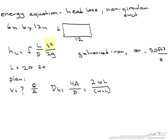Once we find the velocity, we have the length, we have the hydraulic diameter, we're going to have to find the friction factor. And the friction factor is a function of the roughness of the pipe divided by the hydraulic diameter, as well as the Reynolds number. So in order to find the friction factor, we're going to have to look up the roughness of galvanized iron, and we're going to have to calculate our Reynolds number.